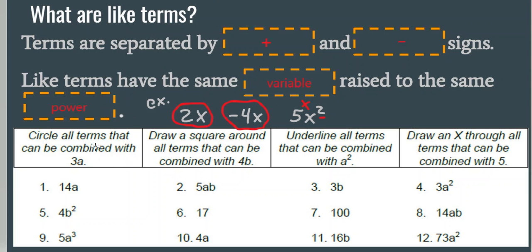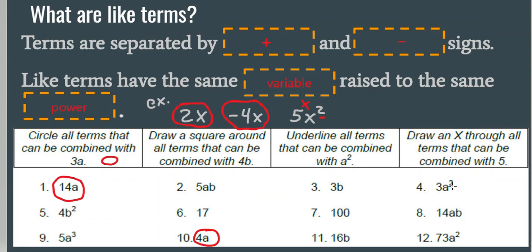Let's try this: circle all terms that can be combined with 3a. I saw 2 that can be combined with 3a — I saw 14a and 4a. That's because they have the same variable and there's no exponent, just like how this 3a has no exponent. Some people might have picked 5ab because they saw the a, but this has a b in it, so it cannot be combined with 3a. Another mistake would be picking 3a squared, but that's not a like term because it has that second power there. So that cannot be combined with 3a.